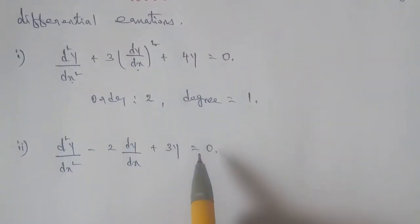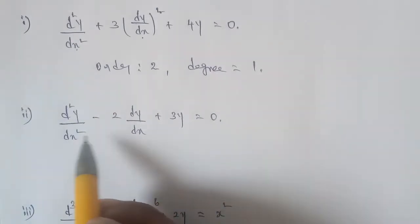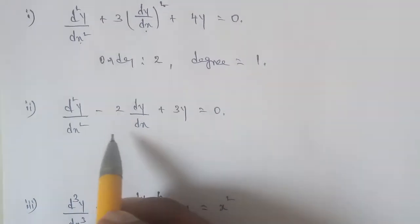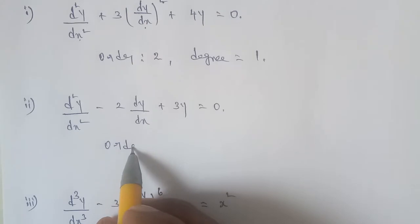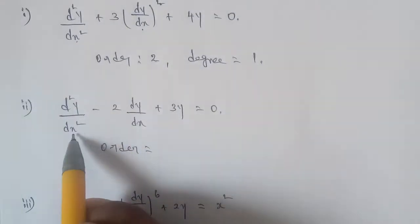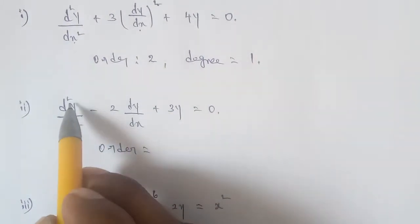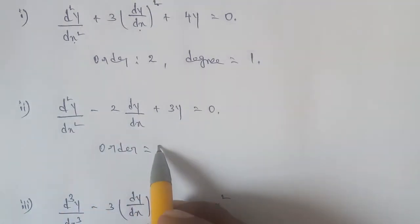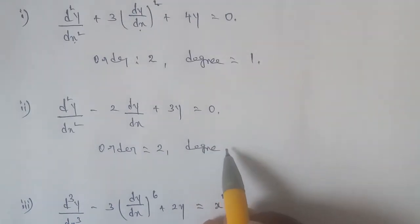Sub-question 2: d²y/dx² - 2·(dy/dx) + 3y = 0. The highest order derivative is d²y/dx², which is order 2. The term dy/dx is first order. So the order is 2.